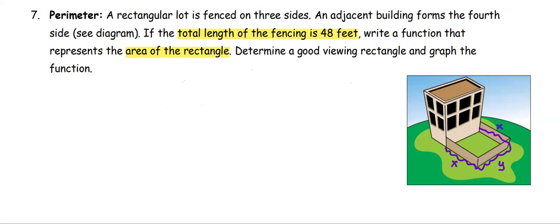You can make a note that the total fencing, which is the sum of x and y and x, is 48 or 2x plus y equals 48.